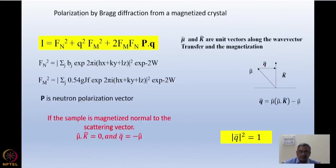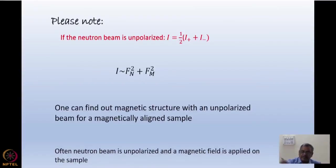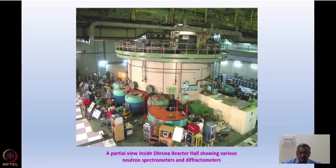In this expression, F_m, F_n, p · q, this averages out to zero for an unpolarized beam and we do have addition of these intensities separately coming from the magnetic part and the nuclear part. So let me just show you how well this can be done.